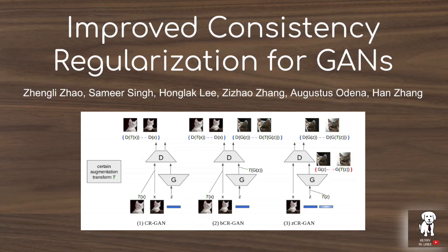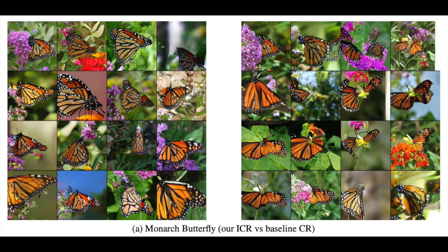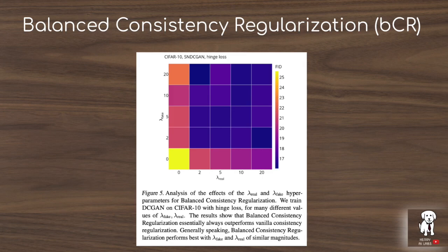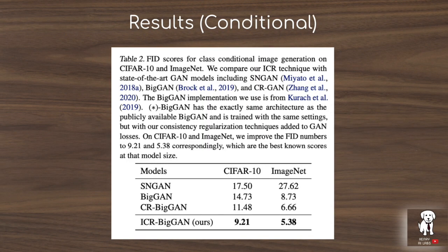This video explains the paper 'Improved Consistency Regularization for GANs.' Enforcing consistent predictions of deep neural networks when taking the same image through a semantic-preserving transformation has led to gains in unsupervised representation learning, such as unsupervised data augmentation, FixedMatch, and SimCLR. This paper builds on previous work by enforcing the discriminator to predict the same class label for real augmented images, also enforcing consistency on generated images, and propagating that down into the source vector z to the generator as well.